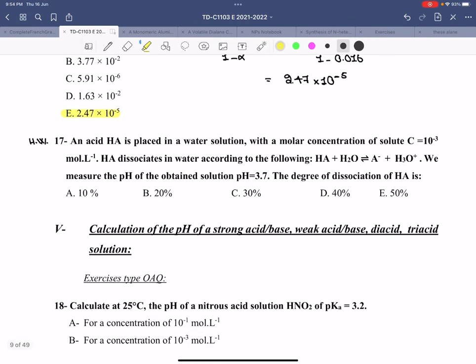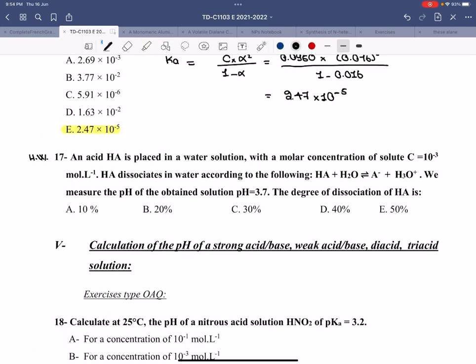Number 17: An acid HA is placed in a water solution with a molar concentration of 10 to negative 3. HA dissociates in water according to the following reaction, which you already know. We measure the pH of the obtained solution to be 3.7. You have the pH. What is the degree of dissociation? It's very simple. If I have the pH, I can find H3O plus.